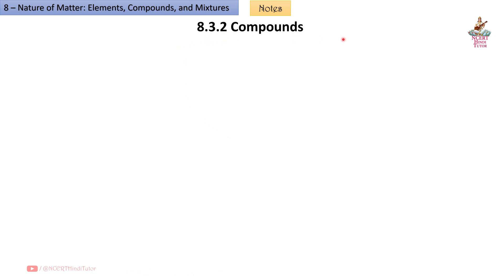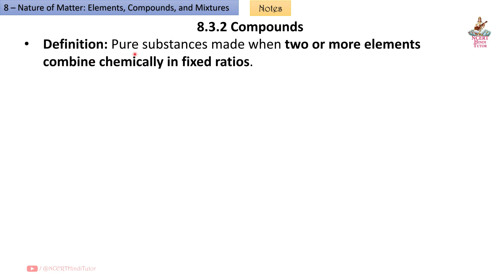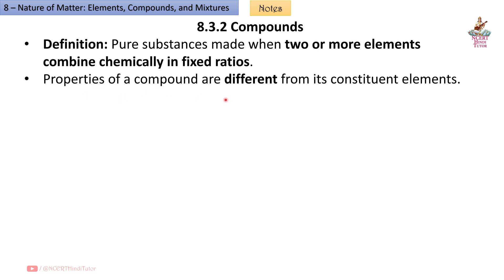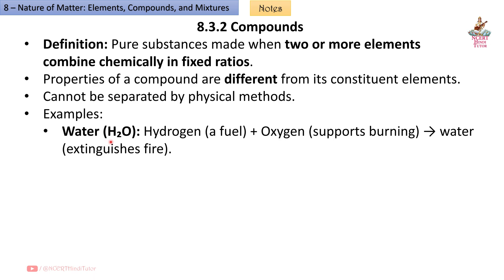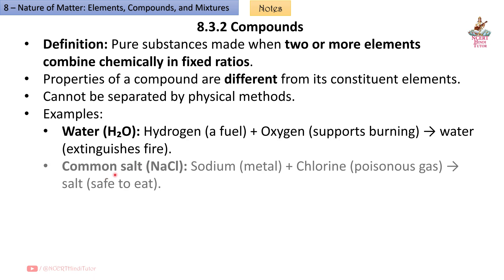8.3.2 Compounds: Pure substances made when two or more elements combine chemically in fixed ratios. Properties of a compound are different from its constituent elements and cannot be separated by physical methods. Example: Water (H₂O) — Hydrogen is a fuel and Oxygen supports burning, yet Water extinguishes fire. Common Salt (NaCl) — Sodium (metal) + Chlorine (poisonous gas) = Salt (safe to eat).